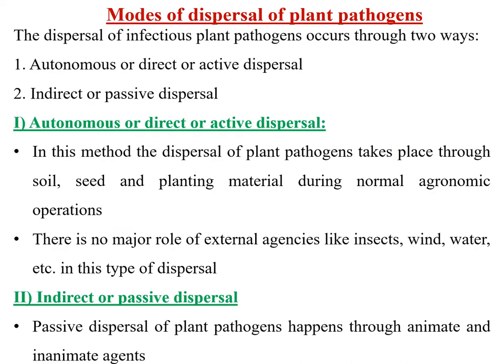There are two modes of dispersal: first, autonomous or direct or active dispersal, and second, indirect or passive dispersal. In direct dispersal, plant pathogens disperse through the soil, seed, and planting material during normal agronomic operations, with no major role for external agencies like insects, wind, or water.